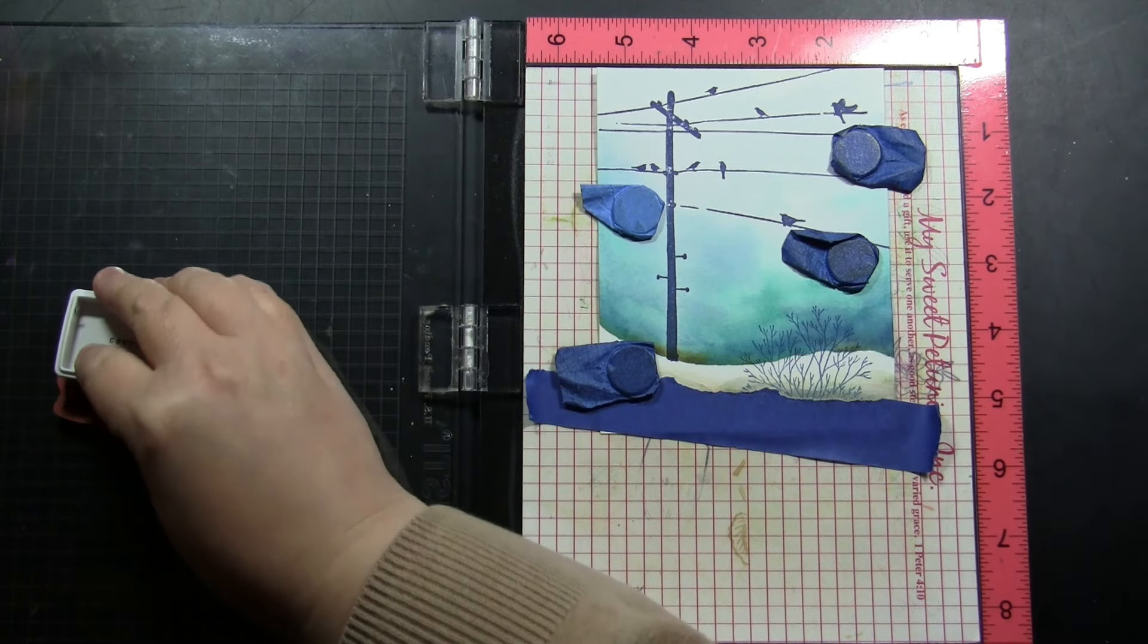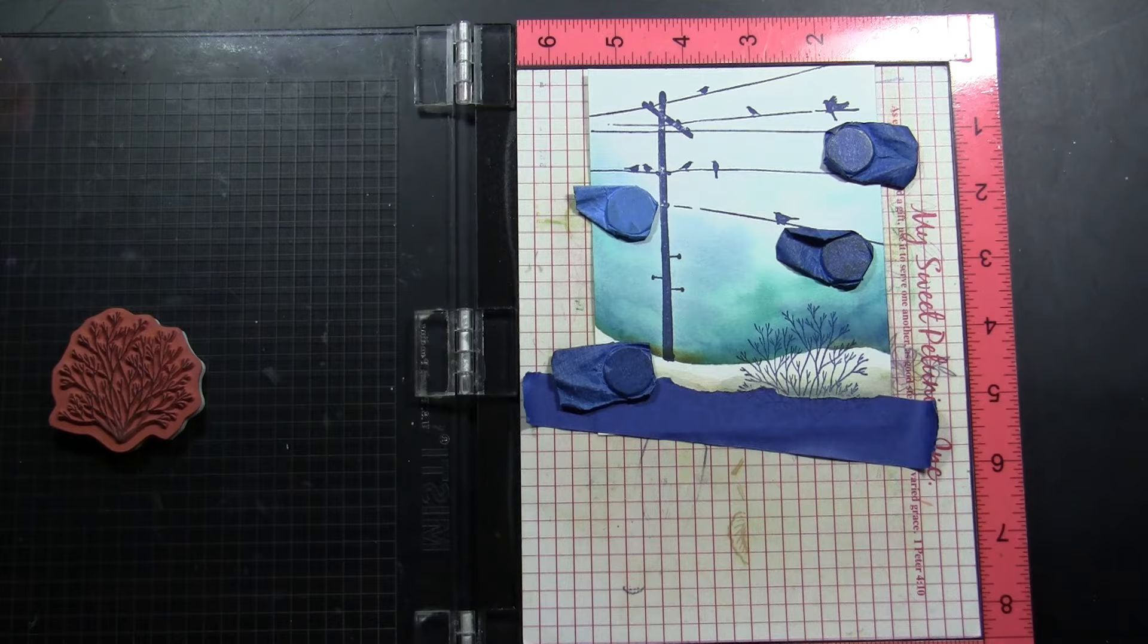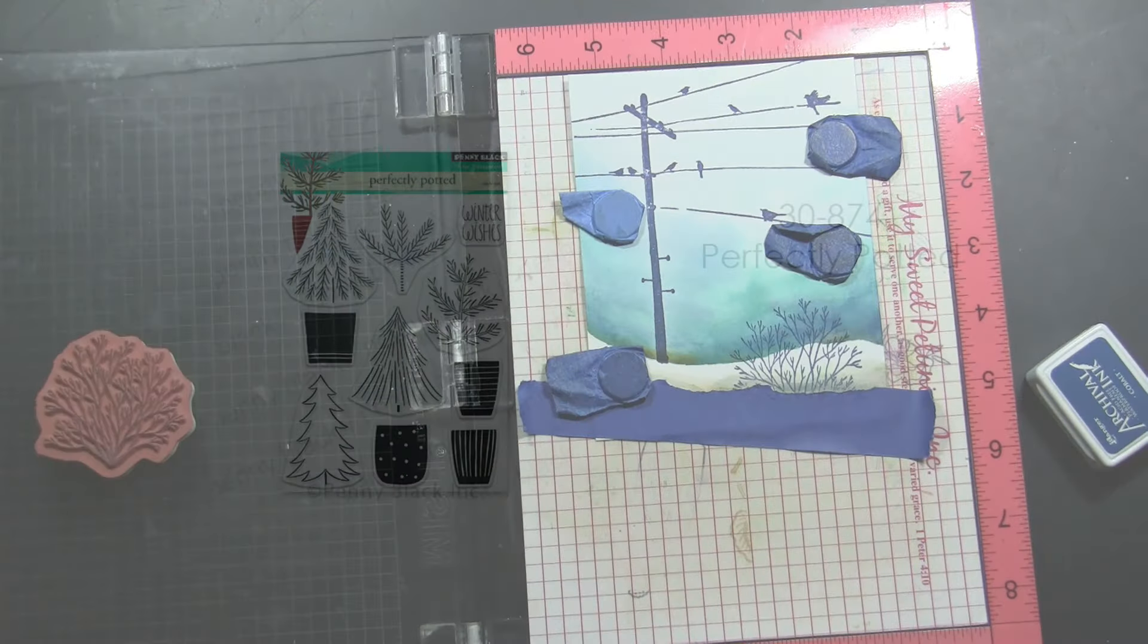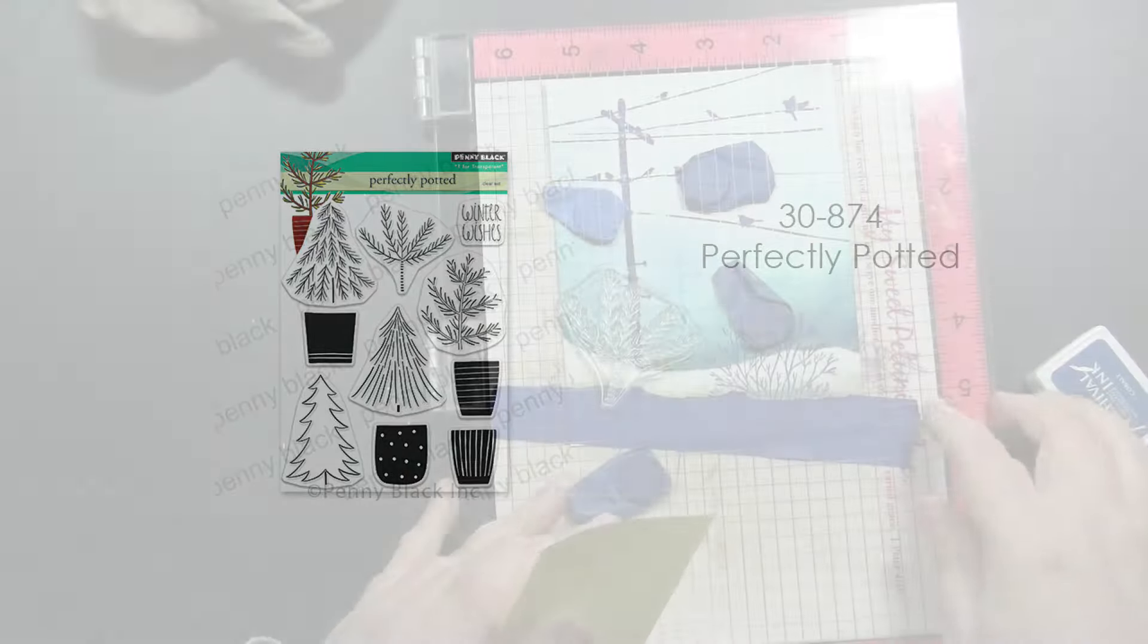I've kept that painters tape in place and I'm going to do some stamping. This stamp is also part of that panoramic cling stamp that did the birds on a wire and I'm just going to stamp that a couple of times using that cobalt. Now I'm going to grab a stamp from the new transparent set 30-874 perfectly potted and I'm going to use this just to add a few extra branches here and there.